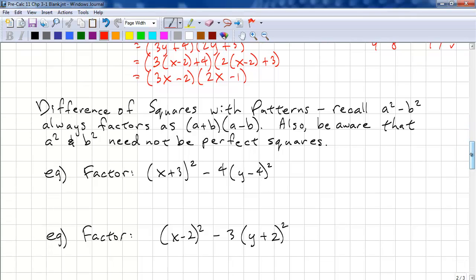When we're doing the difference of squares with patterns, recall that a² - b² always factors as (a + b)(a - b). Or you could also do (a - b)(a + b). But, be aware that we don't have to necessarily have a² and b² as perfect squares. We can just use the square root. Let's look at the first one. We have (x + 3)². We need to take the square root of this. That's 2. And then the square root of this. That's just y - 4.